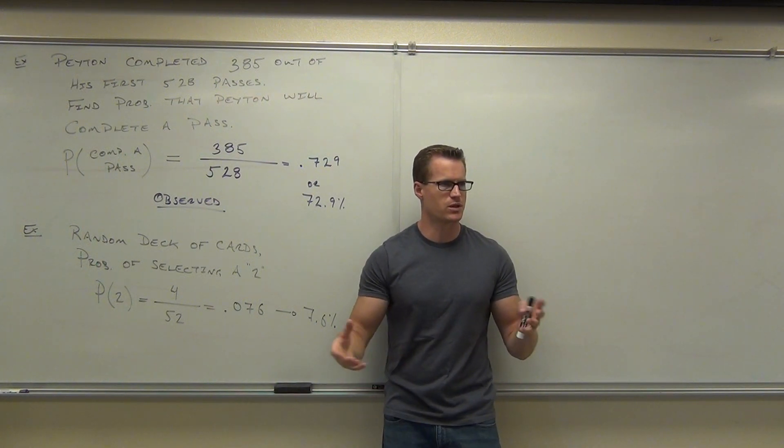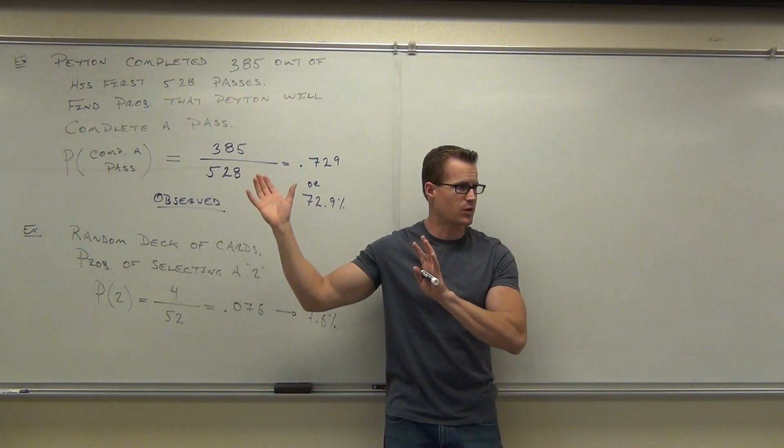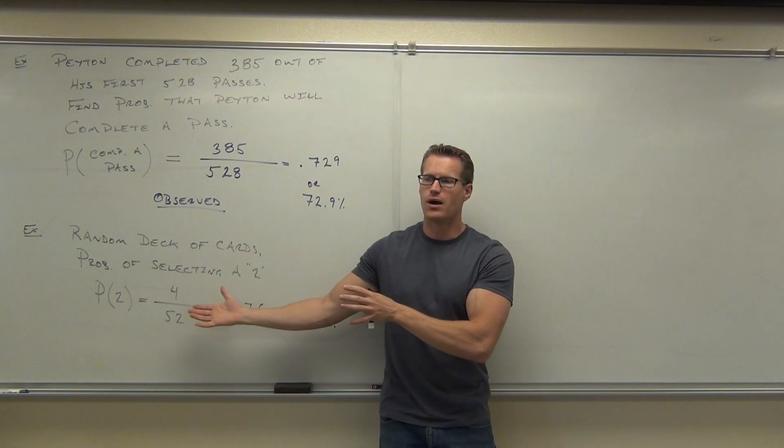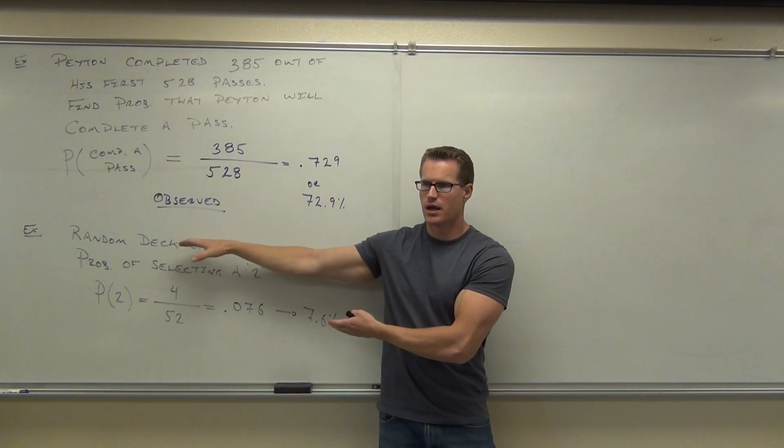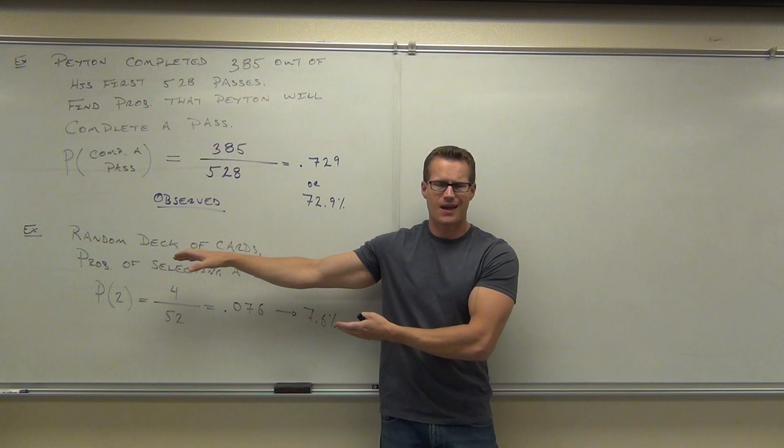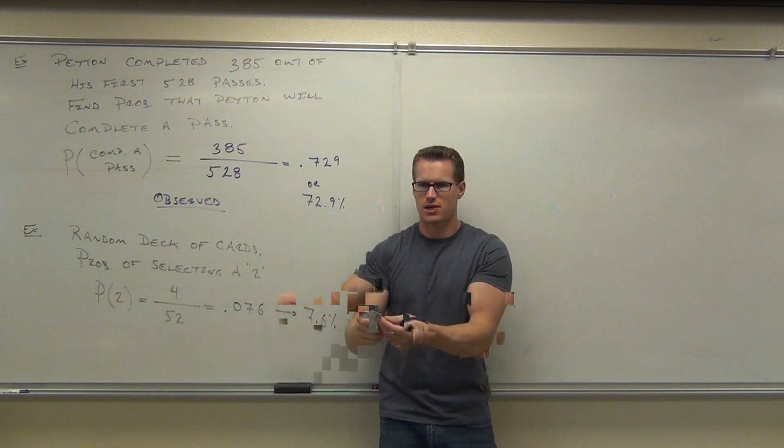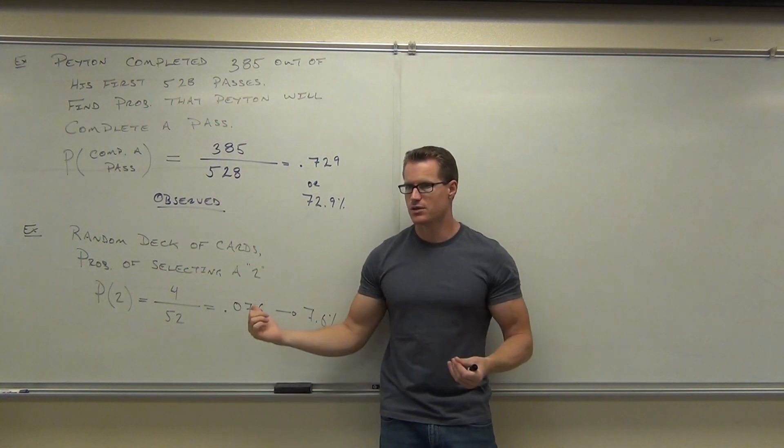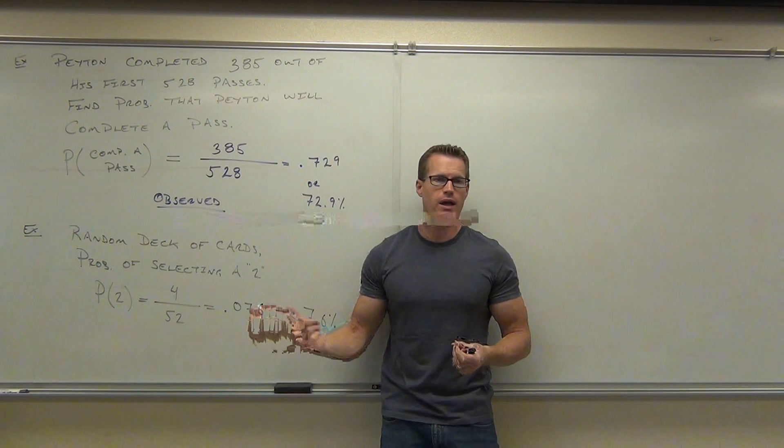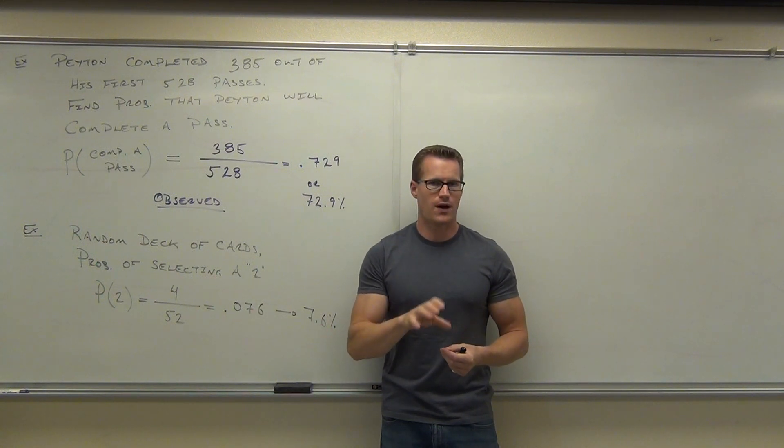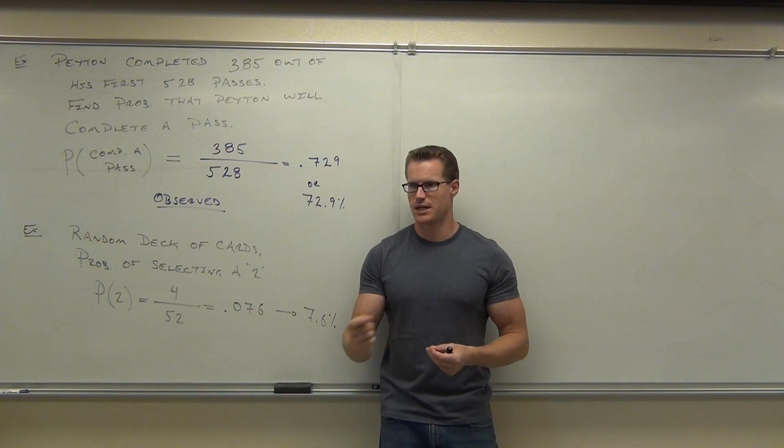Do you see the difference here between the Peyton Manning example where he actually did something and this example? Now, could you turn a card example into an actual observed probability? Answer, sure you could if you just took the deck of cards and did it. So if I gave you this on a test and said, okay,